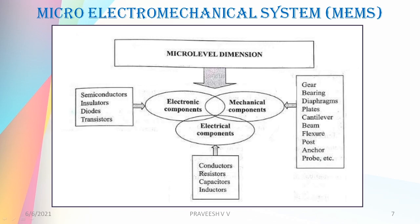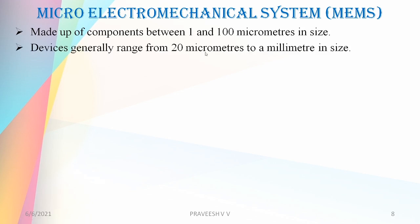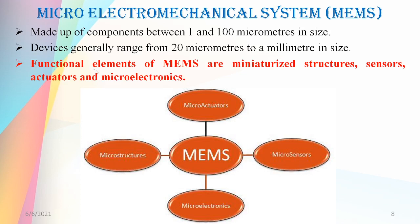Electronic components include semiconductors, insulators, diodes, and transistors. Electrical components include conductors, resistors, capacitors, and inductors. The mechanical components may include gears, bearings, diaphragms, slates, cantilevers, beams, flexures, posts, anchors, probes, etc. MEMS devices are made up of components between 1 and 100 micrometers in size, and devices generally range from 20 micrometers to a millimeter. The functional elements of MEMS are: miniaturized structures or micro structures, plus micro sensors, micro actuators, and micro electronics.